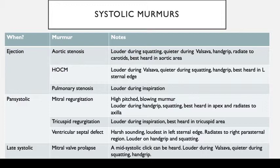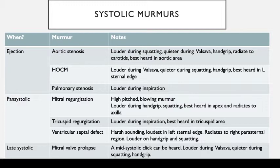This is a busy table for systolic murmurs. When you read a question and it says you hear a systolic murmur, the first thing you should check is the characteristic — when are you hearing it. You can hear it as an ejection systolic murmur, which is a crescendo-decrescendo murmur, a pansystolic murmur present throughout S1 and S2, or a late systolic murmur towards the end. Looking at ejection systolic murmurs, I've put here aortic stenosis, HOCM (hypertrophic cardiomyopathy), and pulmonary stenosis. These three are ejection systolic murmurs, and the notes explain how we differentiate them.